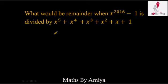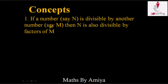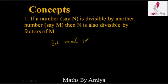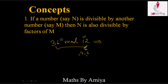Let's check the concepts. Concept number 1: if a number, say n, is divisible by another number, say m, then n is also divisible by any factor of m. For example, if 36 is divisible by 12 — meaning 36 divided by 12 gives remainder 0 — then 36 would always be divisible by the factors of 12, which are 4 and 6.